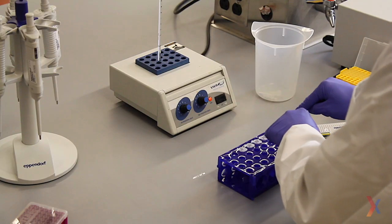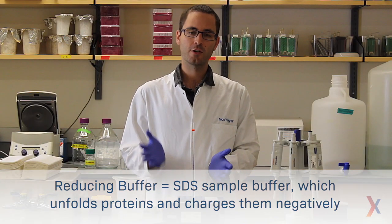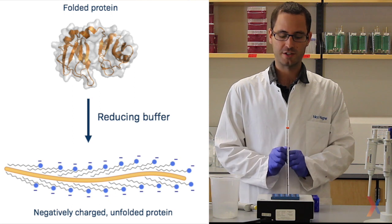The first step of preparing for a protein gel is to take the samples and add reducing buffer to them. The reducing buffer unfolds the proteins and coats them with a negative charge, which allows them to travel through the gel.